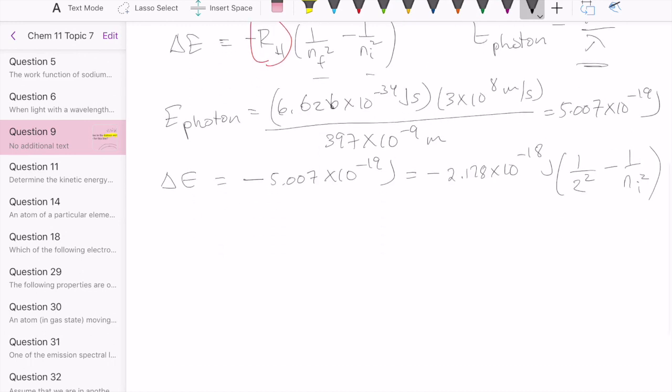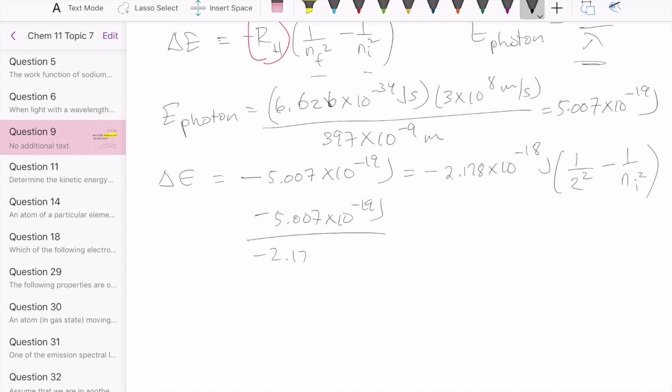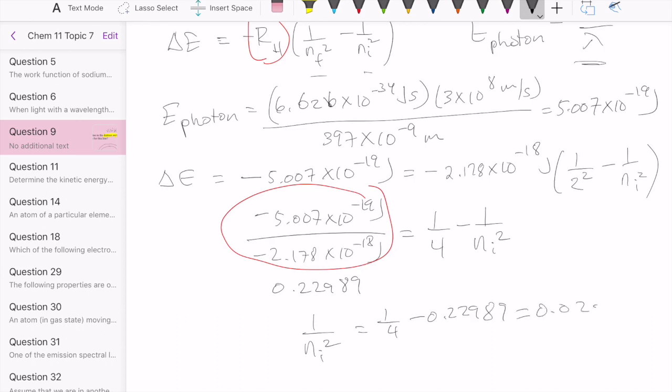Then you can do a little algebra here. You can divide both sides by the Rydberg constant. So now you have on the left side minus 5.007 times 10 to the minus 19 joules over minus 2.178 times 10 to the minus 18 joules. That's going to be equal to 1 over 4 minus 1 over NI squared. This can be calculated on the side, and that should give you 0.22989. So we got 0.2299 equals a quarter minus 1 over NI squared. We do a little algebra to isolate the NI squared on one side, and this becomes quarter minus 0.22989, which ends up being 0.0201.